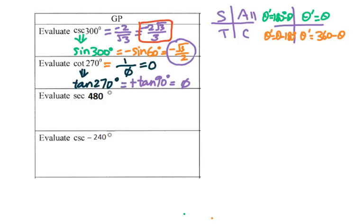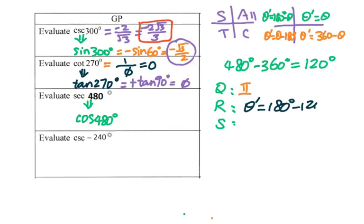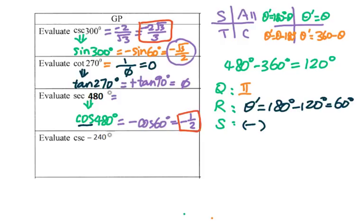Let's go to secant 480 degrees, which means we're looking for cosine 480 degrees. Since it's greater than 360, we subtract 360 to get 120 degrees. Then QRS: second quadrant, reference angle 180 minus 120 equals 60 degrees. For cosine in the second quadrant, it's negative. We get negative cosine 60 degrees, which equals negative 1/2. Therefore, we flip negative 1/2 to get secant 480 equals negative 2.